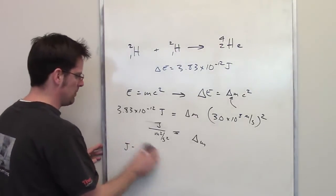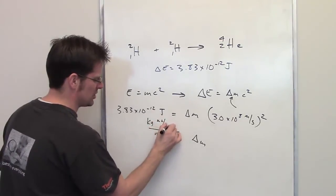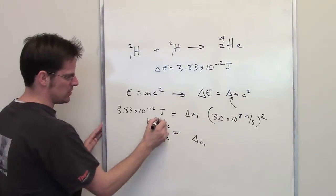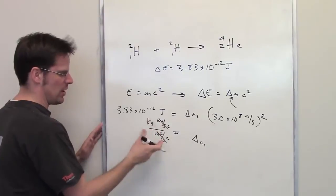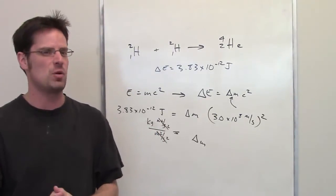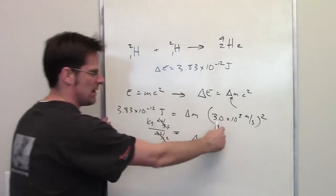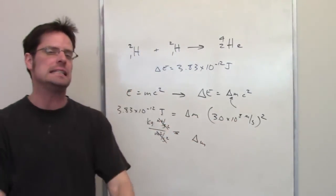So I can replace this J up here with kilogram meters squared per second squared, and then you'll notice that the meters squared per second squared cancel each other out, and I'm left with units of kilograms, which are the units this question is asking for. So go ahead and throw those numbers into your calculator, dividing this number by this number squared, and you'll get the correct answer.